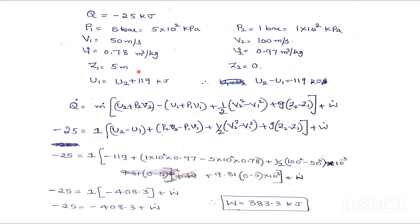It is above the exit level. When Z2 is 0, then easily I can write Z1 is equals to 5 meter.